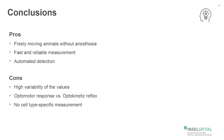I would like to conclude with some pros and cons of the use of optomotor response as a functional measurement. The first pro is that you always use freely moving animals — you don't need anesthesia like in ERG, which helps you to preserve animals. The optomotor reflex measurement is fast and reliable, and the automated detection saves you from observer bias.